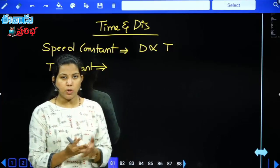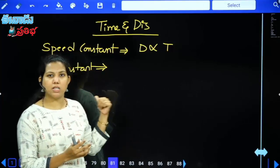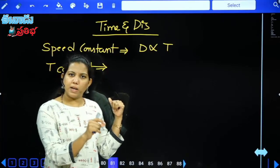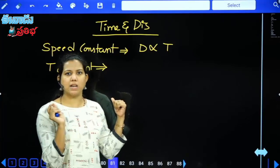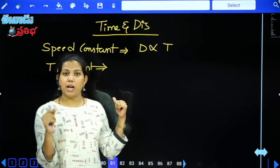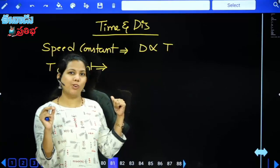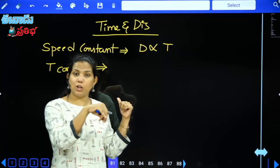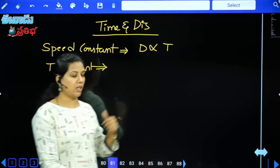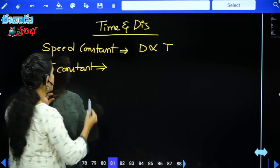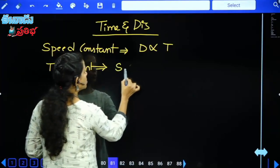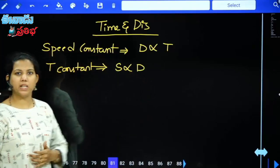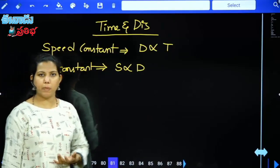Speed increases, and time is kept constant at 1 hour. If speed is 50 km per hour, in 1 hour you travel 50 km. So we conclude: when time is constant, speed is directly proportional to distance.